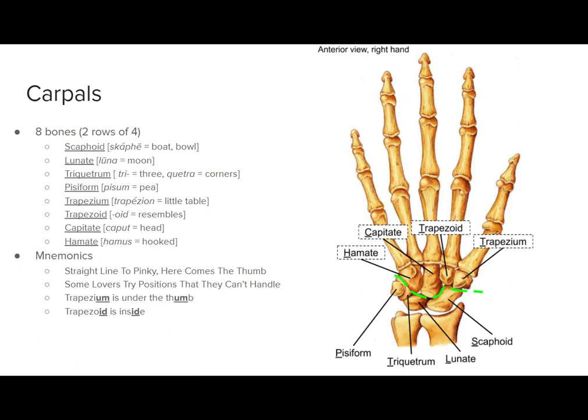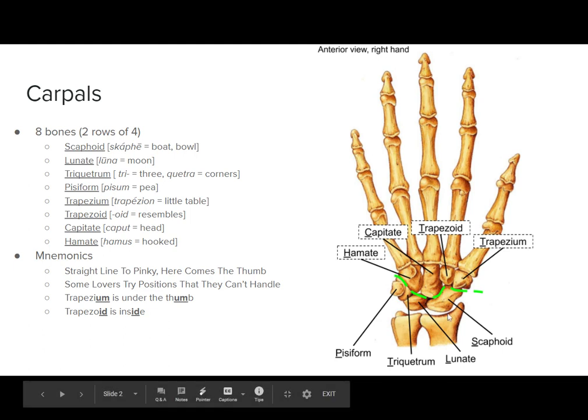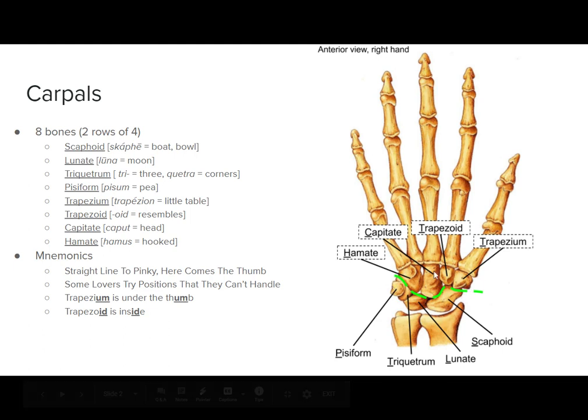The first category we're going to talk about is the carpals. The carpals, that's these wrist bones right here. There are eight of them. There are two rows of four.